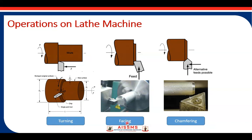The second operation is facing. Facing operation is used to reduce the length of the workpiece. Material is removed along the face of the workpiece, so the feed is perpendicular to the axis. Feed means the movement of the tool along the workpiece. Material is removed from the face so that the length of the workpiece is reduced.